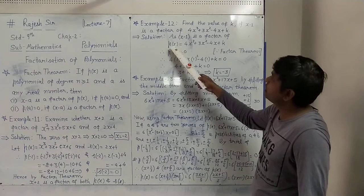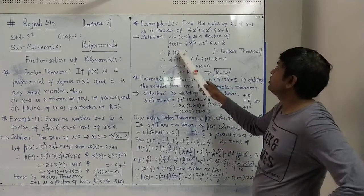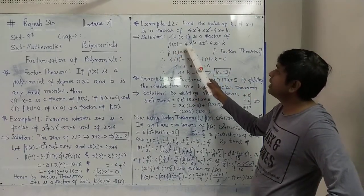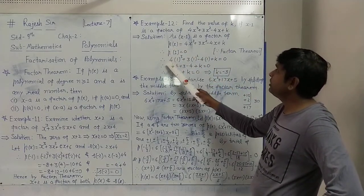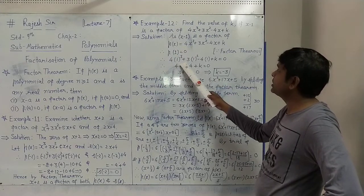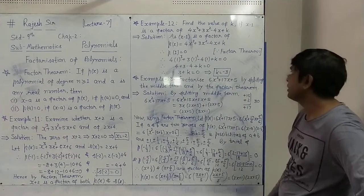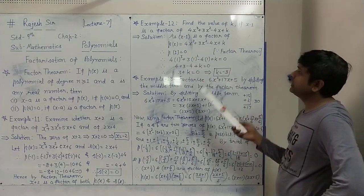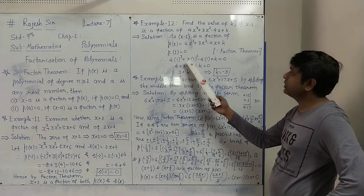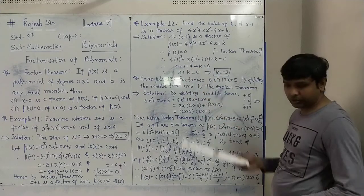P(1) means we replace x by 1 in every term. So P(1) equals 4 times 1 cubed plus 3 times 1 squared minus 4 times 1 plus k, equals 0.